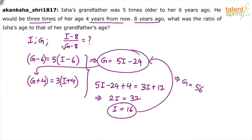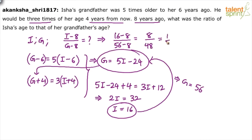Now we need I minus eight divided by G minus eight — that's 16 minus 8 over 56 minus 8, which is 8 over 48, equal to one over six. The answer is 1 : 6.